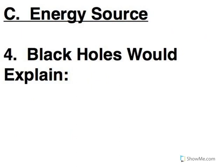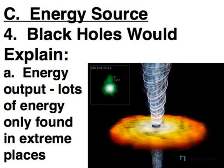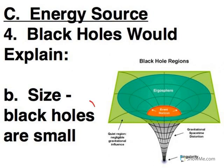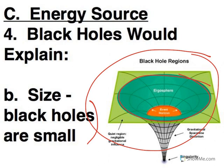So if we've got a black hole and lots of stuff falling into it, what is that going to explain? Energy output — the kinds of energies we are seeing are insane amounts of energy, which means you've got to have an extreme location. And what's more extreme than a supermassive black hole? We said these things were small — black holes are small. We're observing the accretion disk, which is going to be outside of the event horizon, so it's going to be bigger than the black hole itself, but not huge. These are at most the size of our solar system, which is the kind of size you'd expect for an accretion disk around a supermassive black hole.